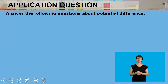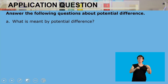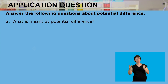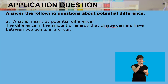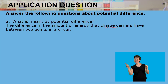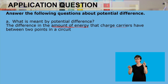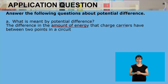The first question under application questions is asking us about potential difference. Potential difference is the difference in amounts of energy that charge carriers have between two points in a circuit. The charge carriers will have a different amount of energy between those two points, and that different amount of energy is called potential difference.